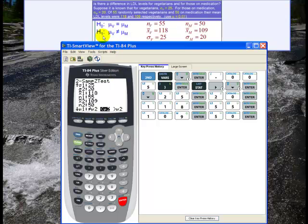Our hypothesis, or our H1, is that the mean for the vegetarians is not equal to the mean for those on medication. So I click on the not equal to mu two. So mu one is not equal to mu two. And go down to calculate, and hit enter.